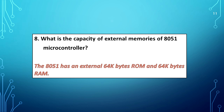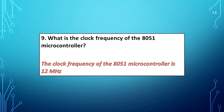What is the capacity of the external memories of the AT51 microcontroller? The AT51 has an external 64 kilobytes ROM and 64 kilobytes RAM. What is the clock frequency of the AT51 microcontroller? The clock frequency of the AT51 microcontroller is 12 MHz.